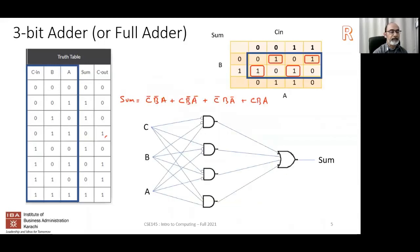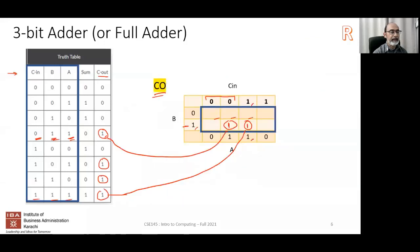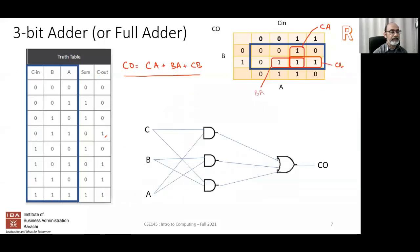From the Boolean expression, one could actually construct a logic circuit comprising different types of gates, such as AND gates, OR gates, NOR gates, and so on. We looked at the example of the three-bit adder and the different logic circuits for both the sum and the carry-out.